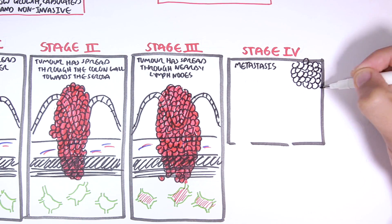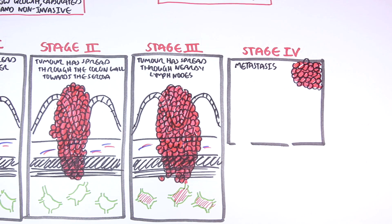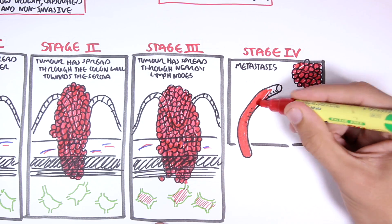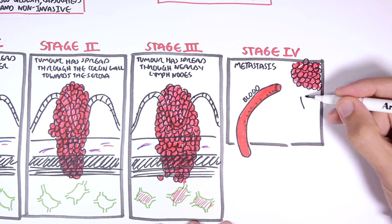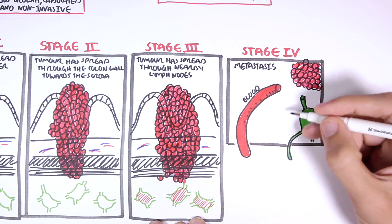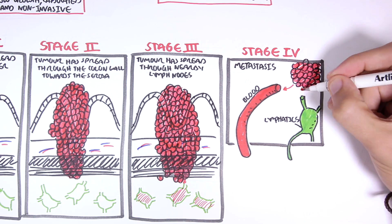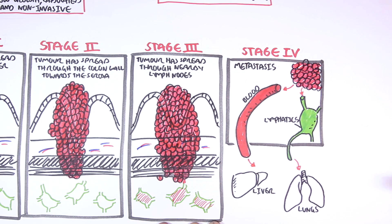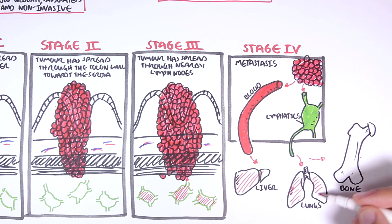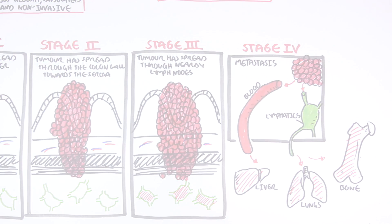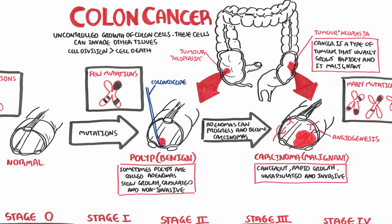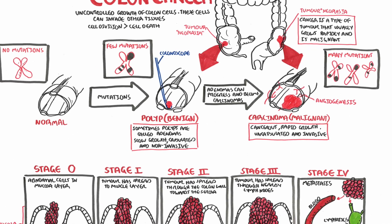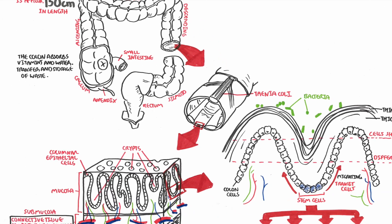Stage 4 is where the cancer cells have metastasized and have begun invading other tissues and organs by traveling through the blood and lymphatics. The cancer cells can invade other organs such as the liver, lungs, and bone. And that concludes the video on the colon and an introduction to colon cancer. There will be another video that will look in greater detail at colon cancer, specifically colon cancer carcinogenesis.